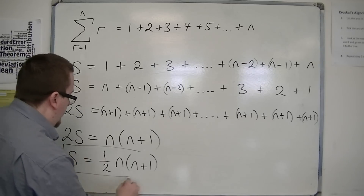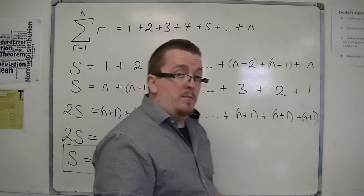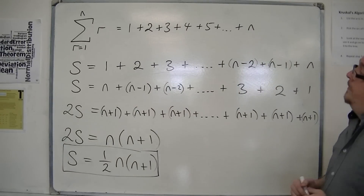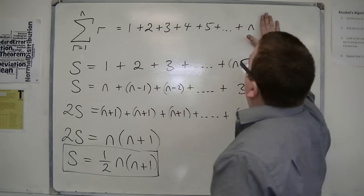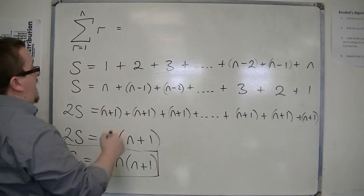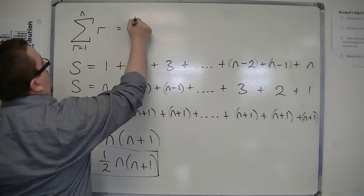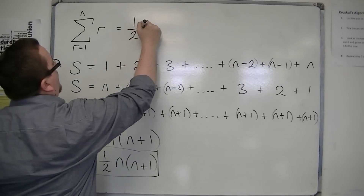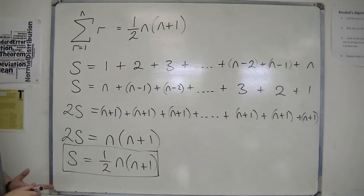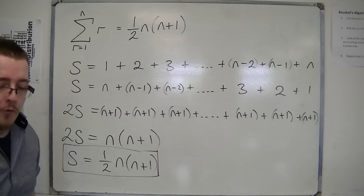And this is the result I'm looking for. The sum of the first n natural numbers is one half n times n plus 1, and this is a very, very useful result.